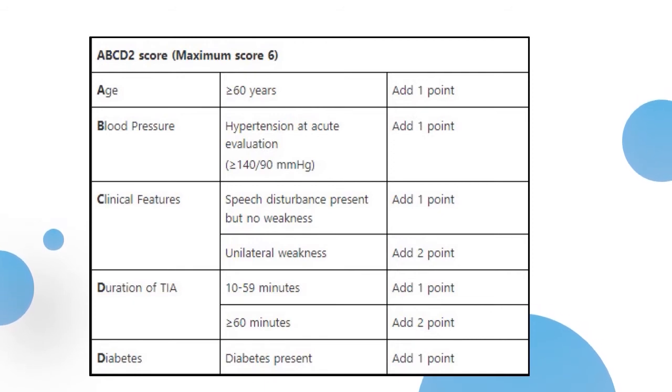If there is any speech disturbance present but there is no weakness, one point is given. And if there is unilateral weakness, two points are given.